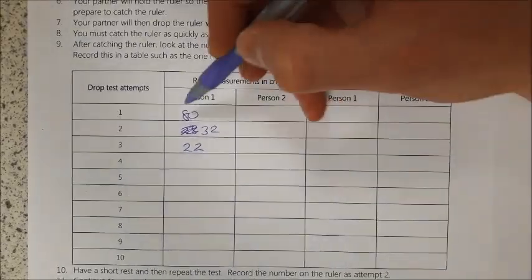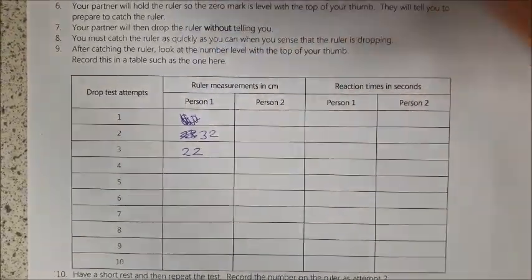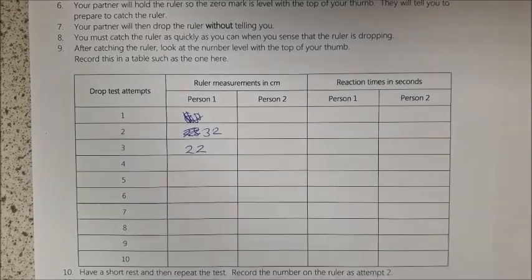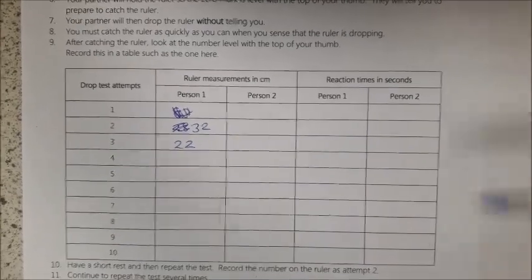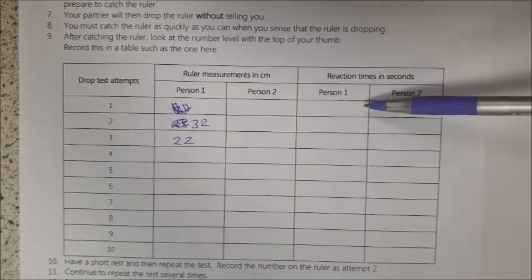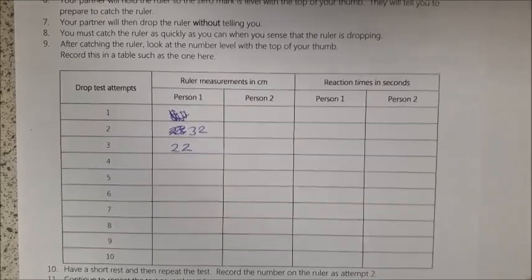So I'm going to scrub out that one because that's the clear anomaly, and I'm going to use 32 and 22. So to work out our reaction times, we actually have to use a conversion table, which is just here.